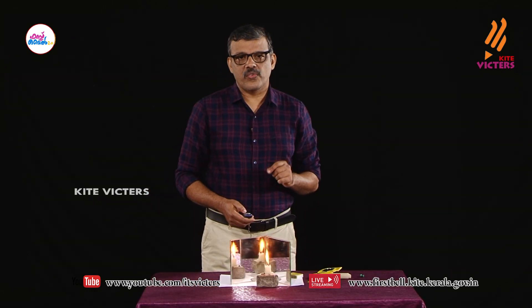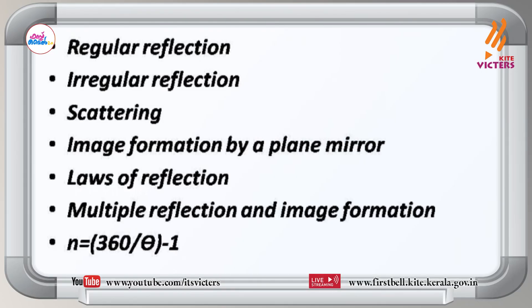Now let us recap what we learned today. We started the lesson with laws of reflection, then covered regular reflection, irregular reflection, scattering, image formation by a plane mirror, multiple reflection and image formation, and the formula n = (360 ÷ θ) − 1. I am winding up today's class. Do the assignment and prepare well for the upcoming SSLC final examination. All the best. Thank you.